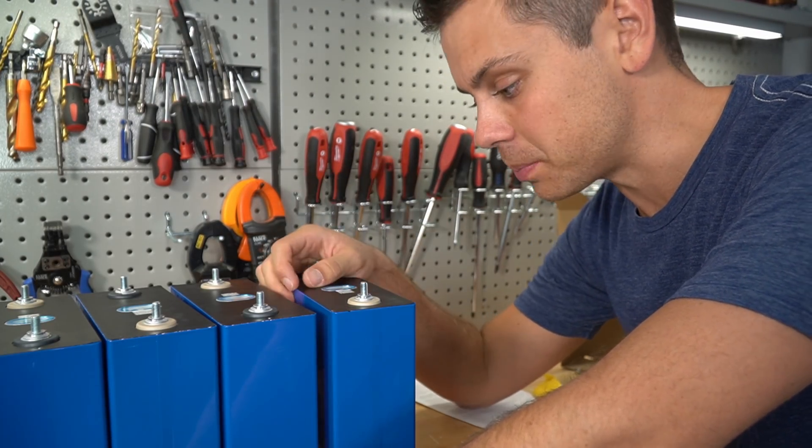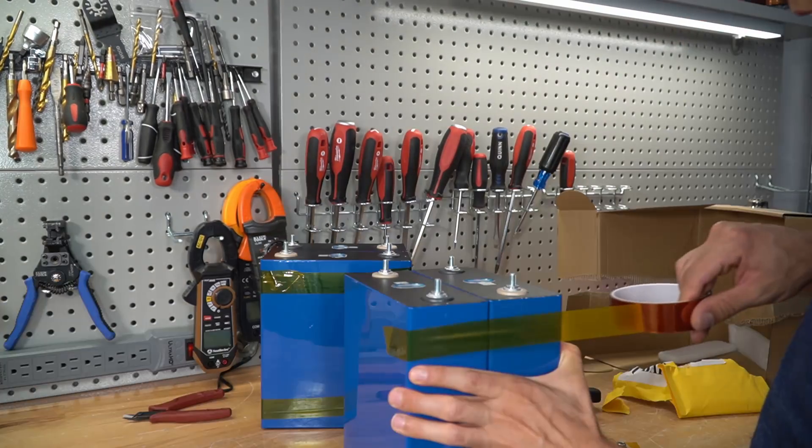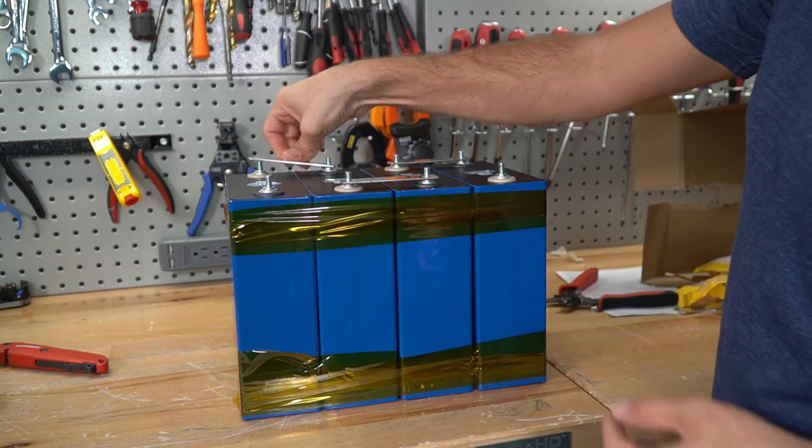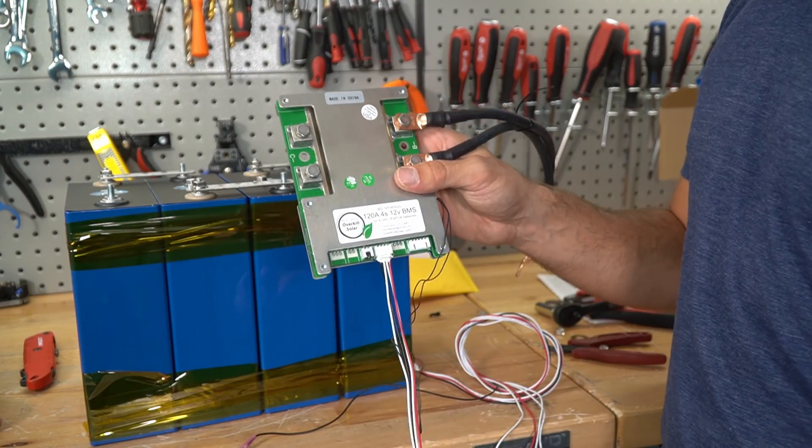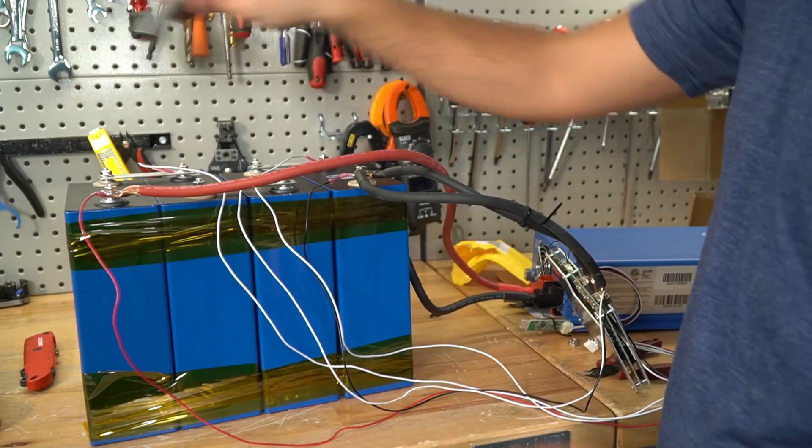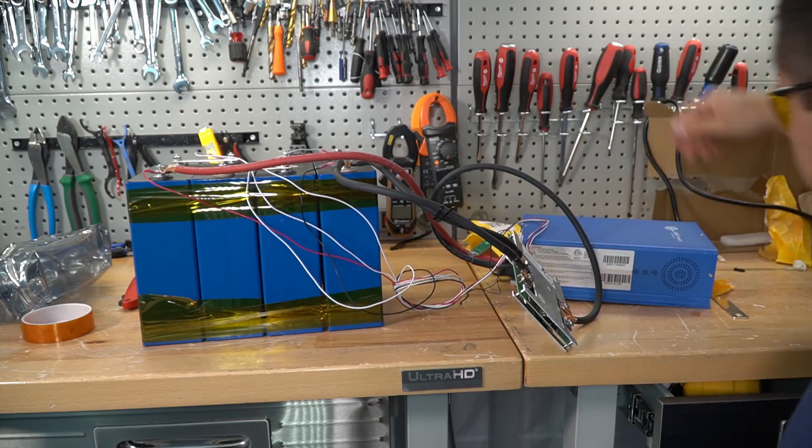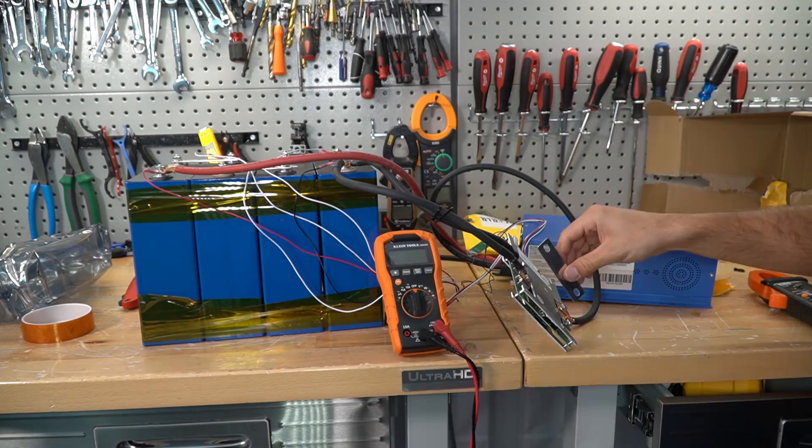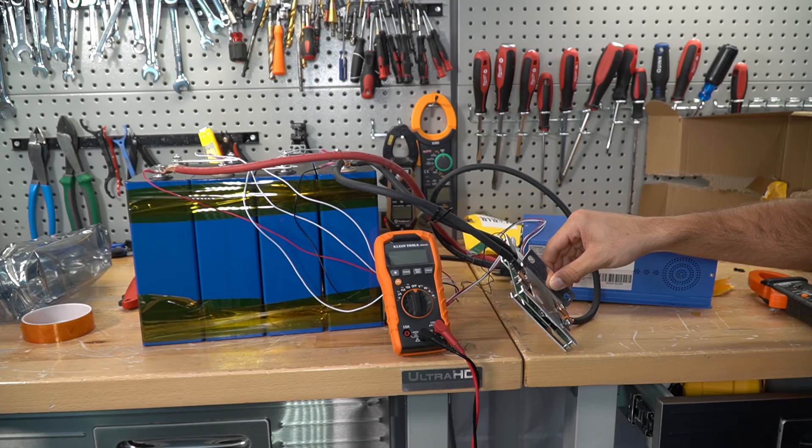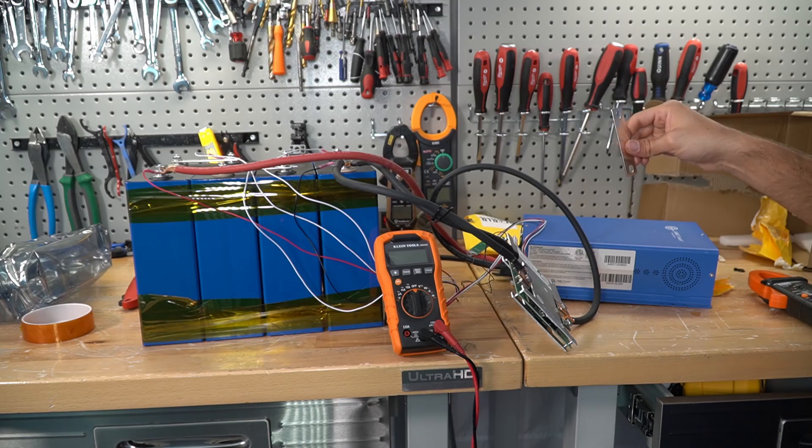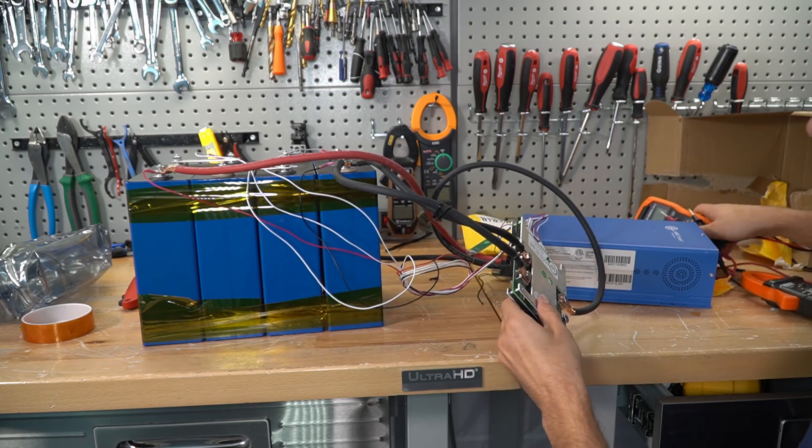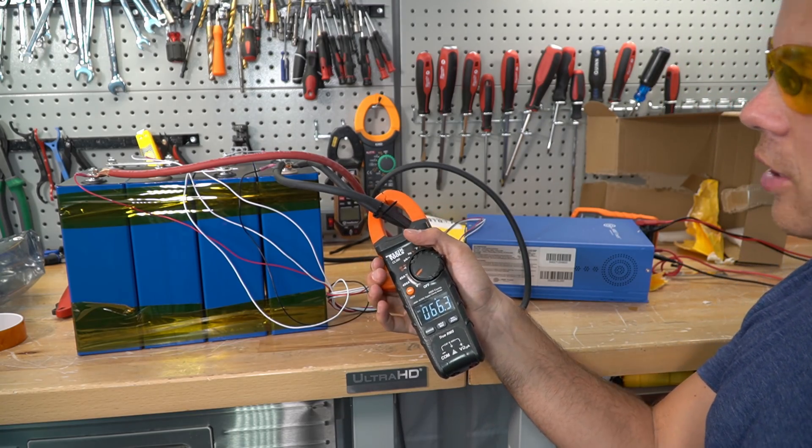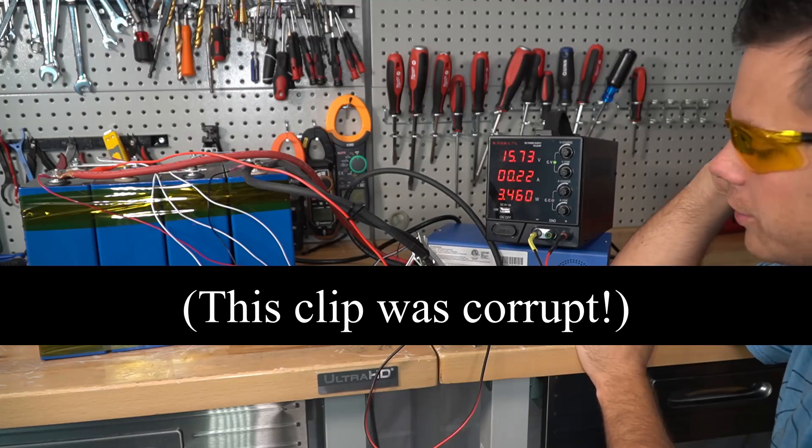We have a 120 amp Overkill Solar BMS and it's on 13 volts. The BMS is disconnected, let me just short it out real quick. Cool. So we're charging with 65 amps, we'll come back in a few hours when it's fully charged. There we go, high voltage disconnect, so it's finally charged.